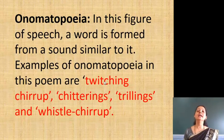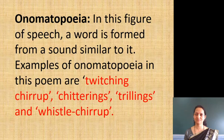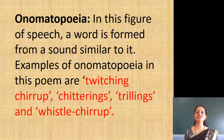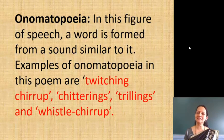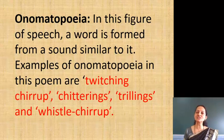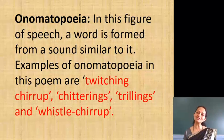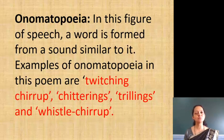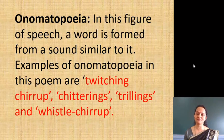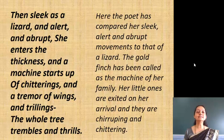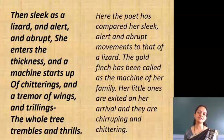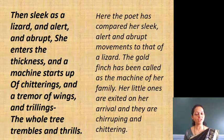Now let us understand onomatopoeia. In this figure of speech, a word is formed from a sound similar to it. Examples of onomatopoeia in this poem are: twitching chirrup, chitterings, trillings, and whistle-chirrup (which comes in the next stanza). 'Then sleek as a lizard and alert and abrupt, she enters the thickness and a machine starts up of chitterings and a tremor of wings and trillings. The whole tree trembles and thrills.'